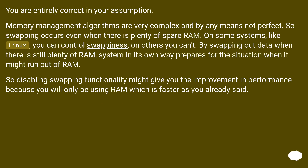You are entirely correct in your assumption. Memory management algorithms are very complex and by no means perfect, so swapping occurs even when there is plenty of spare RAM. On some systems, like Linux, you can control swappiness; on others you can't. By swapping out data when there is still plenty of RAM, the system in its own way prepares for the situation when it might run out of RAM. So disabling swapping functionality might give you an improvement in performance, because you will only be using RAM, which is faster.